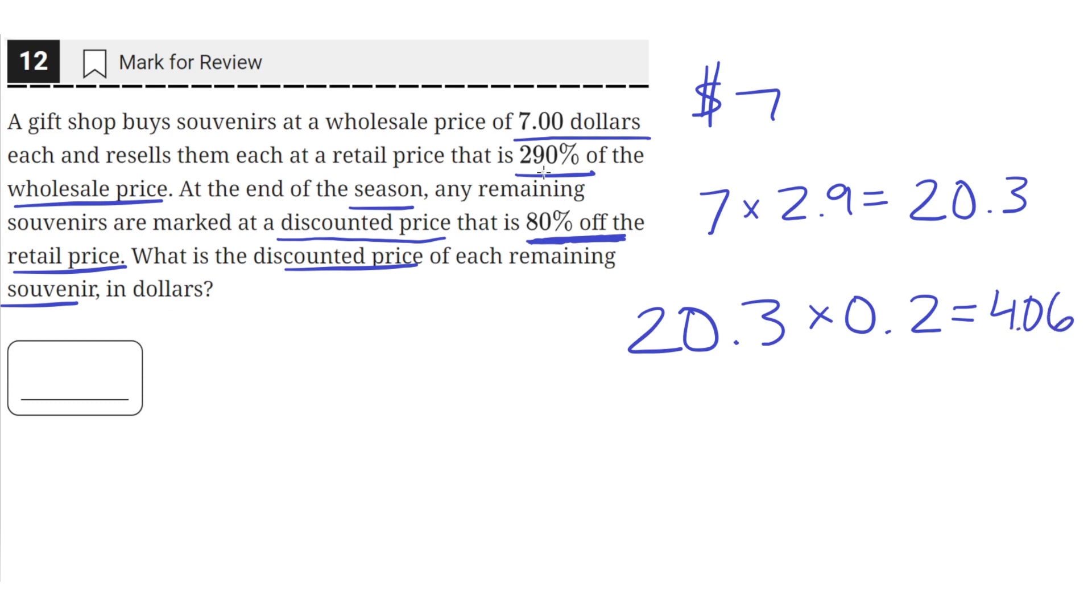So after increasing by 290% to get the retail price, and then decreasing by 80% to get the final sale price, we get a price of $4.06.